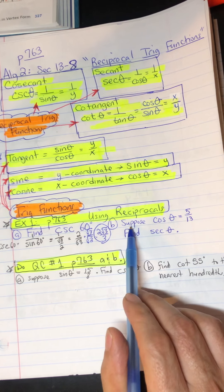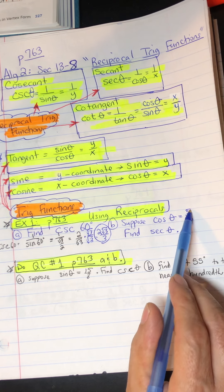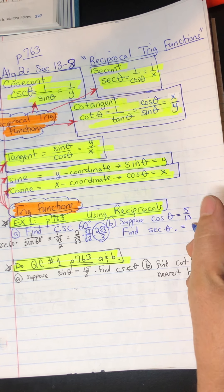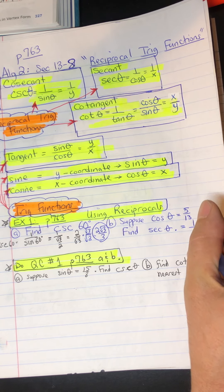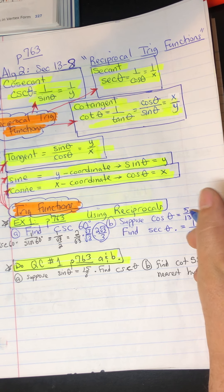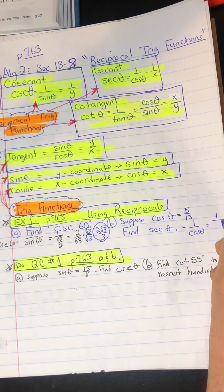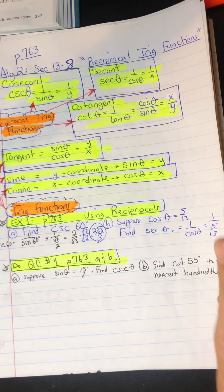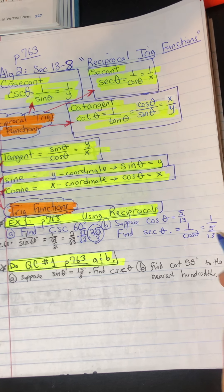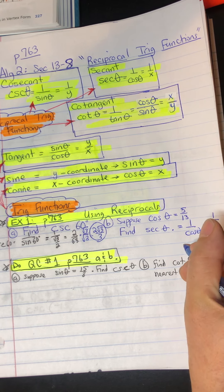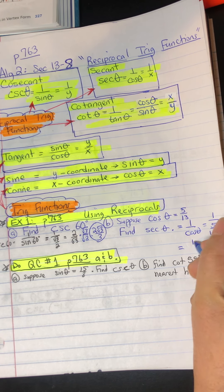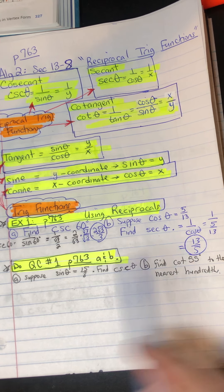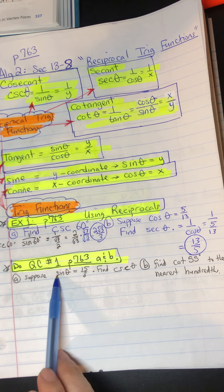Part B: suppose the cosine of theta is 5 over 13 — what is the secant of theta? Secant and cosine are reciprocal functions, so secant equals 1 over cosine of theta. Since cosine of theta is 5 over 13, we just do 1 over 5/13, which is the reciprocal of 5 over 13. The answer is 13 over 5.